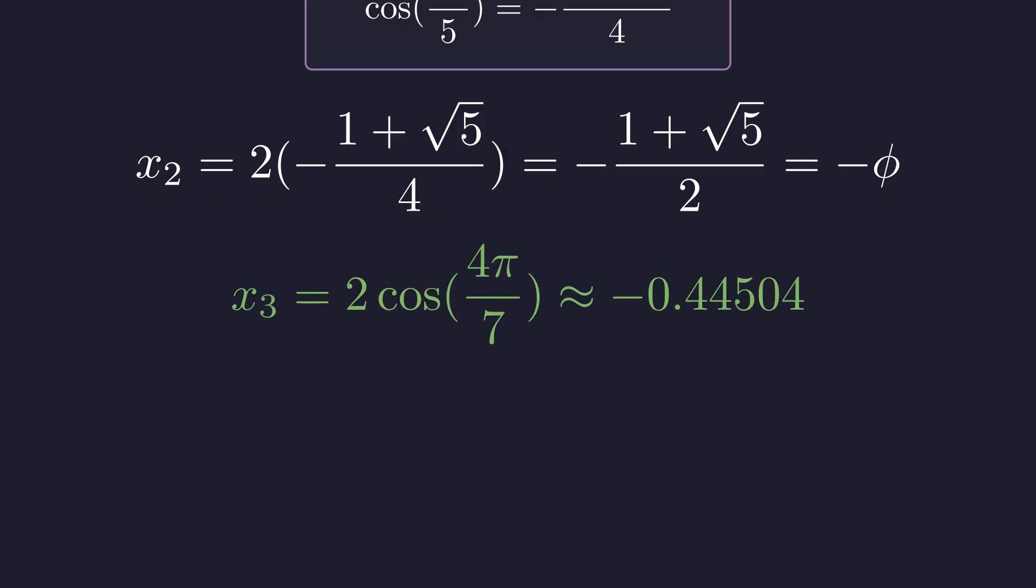The third solution, 2 cosine of 4 pi over 7, doesn't have a nice closed form, but it's approximately negative 0.445.